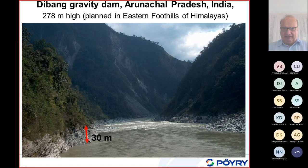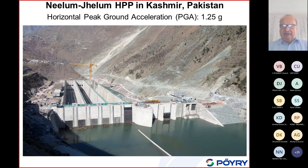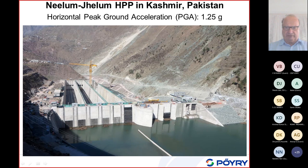This is in India — the Deepang River — showing about a 30-meter mark to illustrate how much the water level fluctuates within a year. The Neelom-Jhelum project in Kashmir is located in a very highly seismic area. The peak ground acceleration of the safety evaluation earthquake at the headworks is 1.25 G — very large.